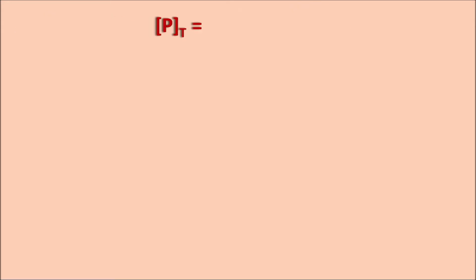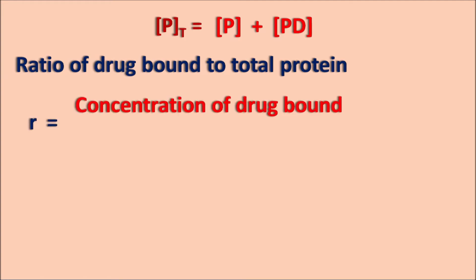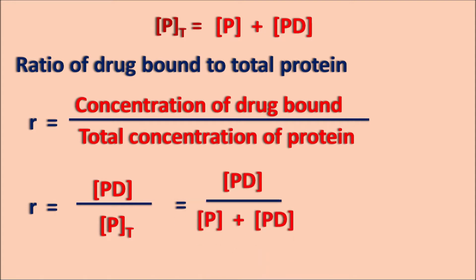The total protein concentration Pt is equal to P plus Pd. From this we can derive the ratio of the drug bound to the total concentration of the protein. R is equal to the concentration of the drug bound divided by the total concentration of the protein — that is Pd by Pt. Since Pt equals P plus Pd, we can expand this equation: R equals Pd by P plus Pd, which is the ratio of the protein interacting with the drug to the total protein concentration. This ratio gives the kinetics of protein binding.